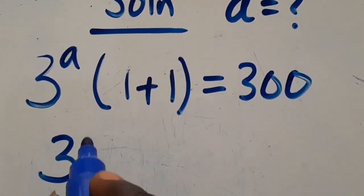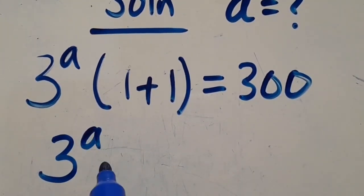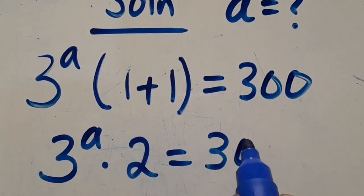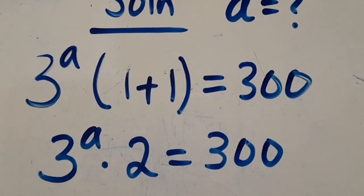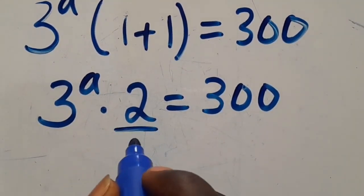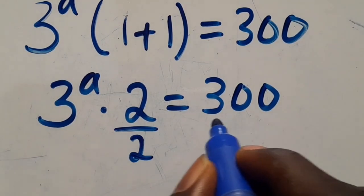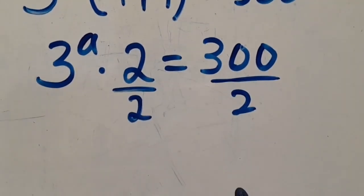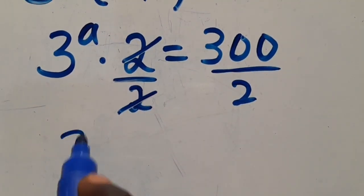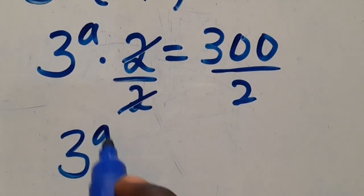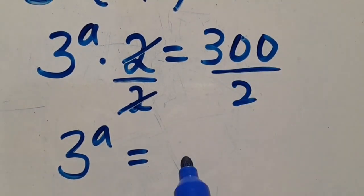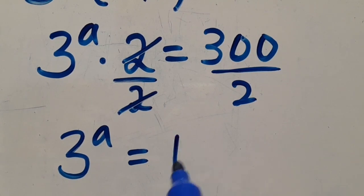From here we have 3 to the power of a times 1 plus 1, which is 2, equals 300. Then from here, let's divide both sides by 2. This and this will cancel, so we are going to have 3 to the power of a equals 300 divided by 2, which gives us 150.